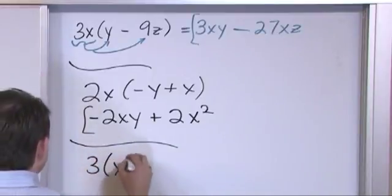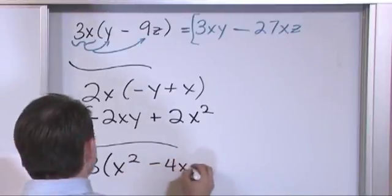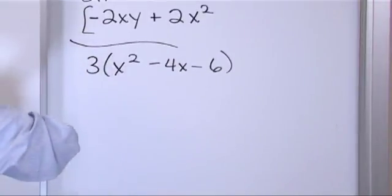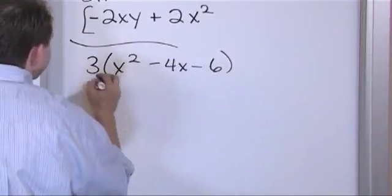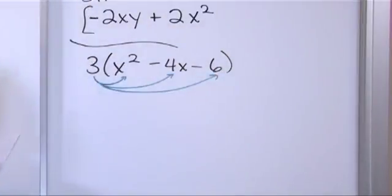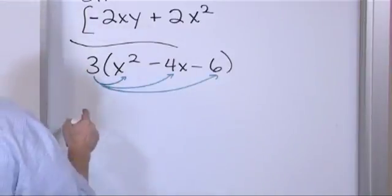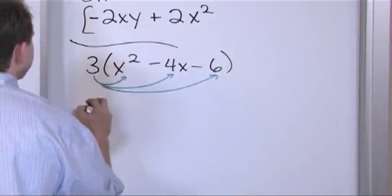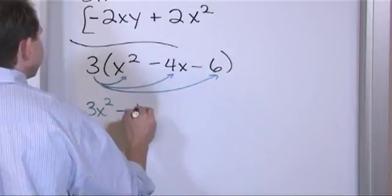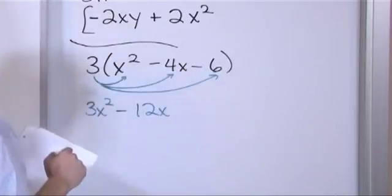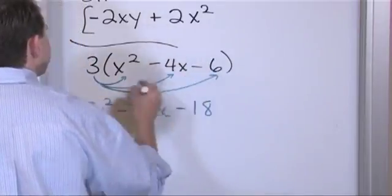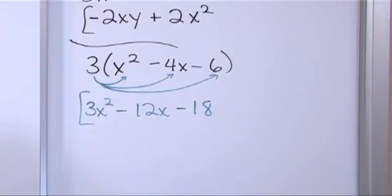Now let's say I have a number on the outside — 3 times (x squared minus 4x minus 6). When distributing, the three gets multiplied into every one of these terms, no matter how many there are. Three times x squared gives 3x squared. Three times four gives twelve — don't forget the negative and the x — giving minus 12x. Three times six is eighteen, but it's negative eighteen because of the sign. The answer is 3x squared minus 12x minus 18.